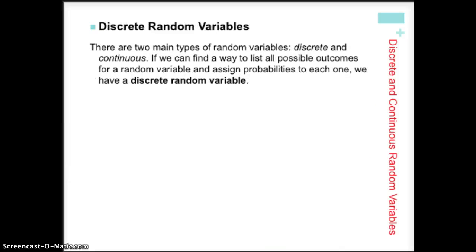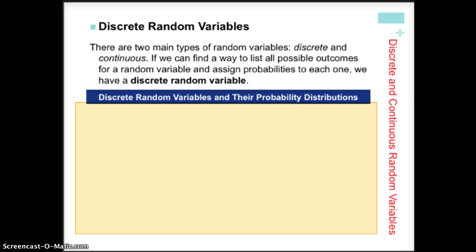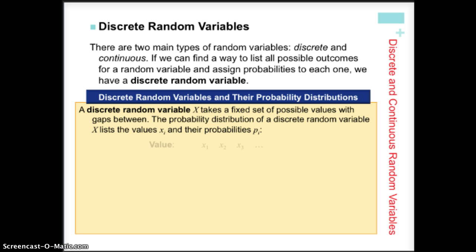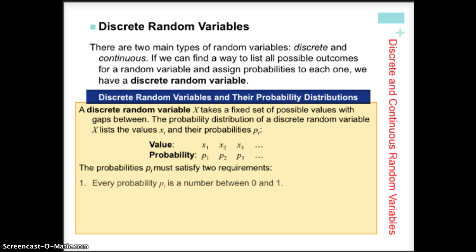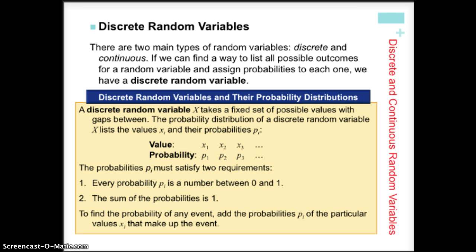Discrete random variables are once again the ones that we would count. We can list the different possible values of the random variable and the probability associated with each. We have two requirements: probability is a number between zero and one, and the sum of the probabilities of any distribution needs to be exactly one. To find the probability of any event, we add the probabilities that make it up. For example, to find the probability of rolling an even number on a die, we add the probabilities of getting a 2, a 4, and a 6.